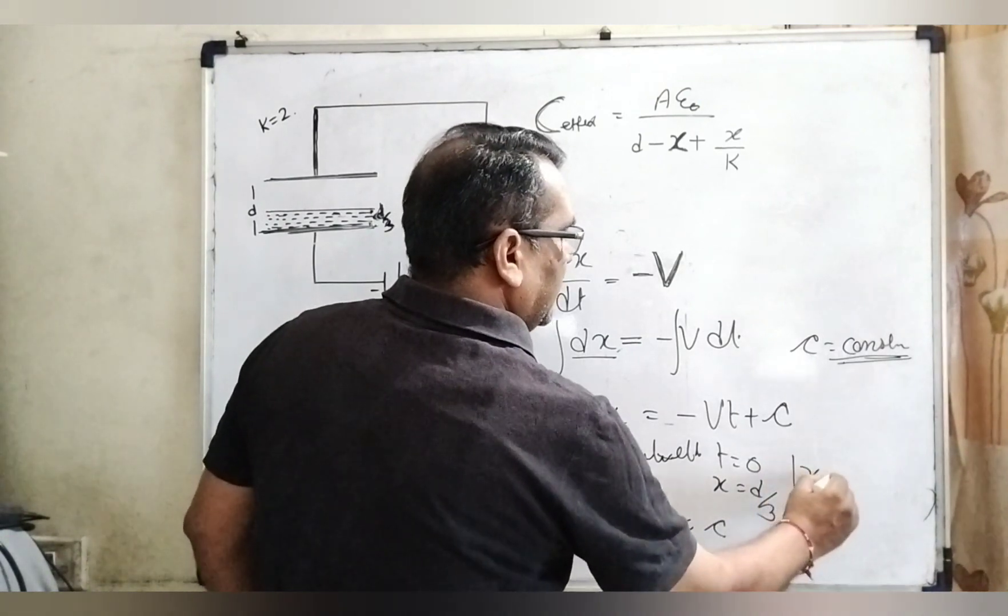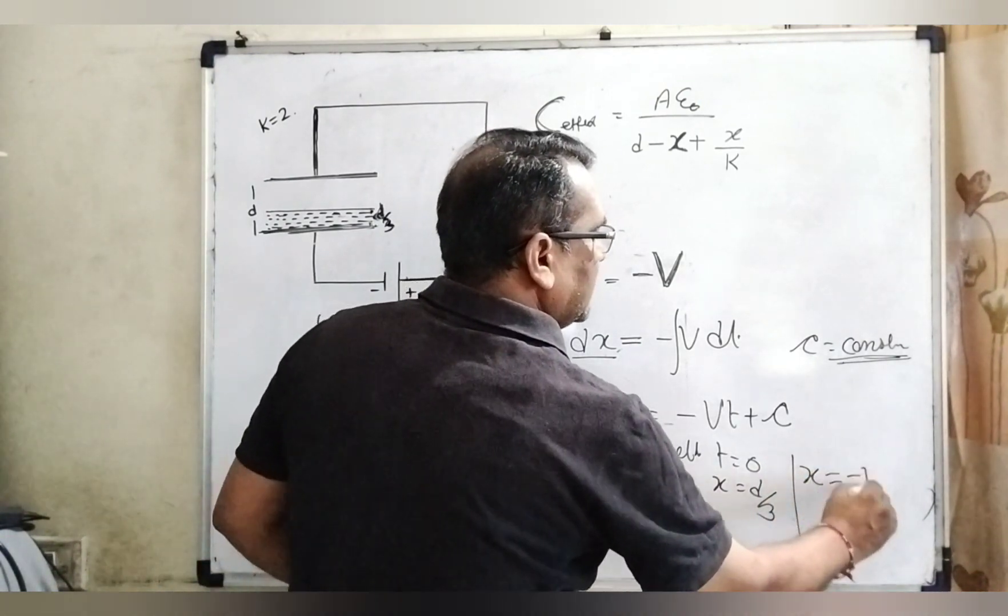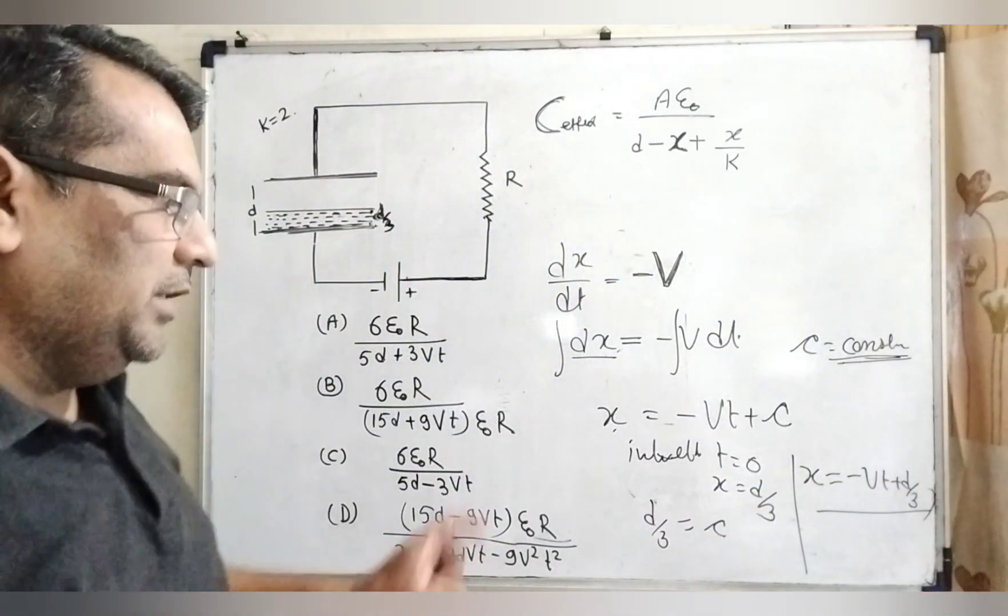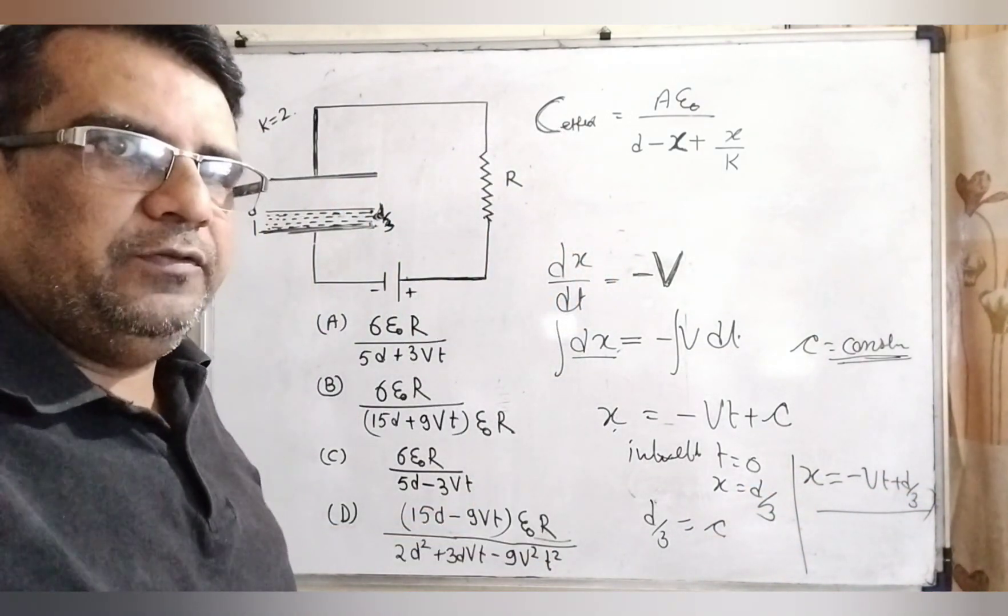Now, what is x? Here x equal to minus Vt plus d by 3. I hope so, this portion you understand. Now, proceed further.